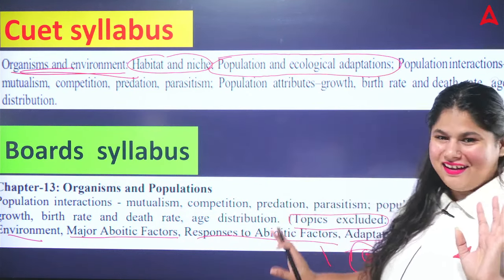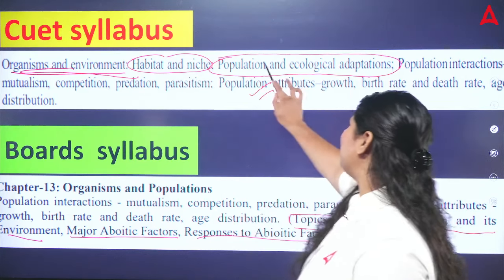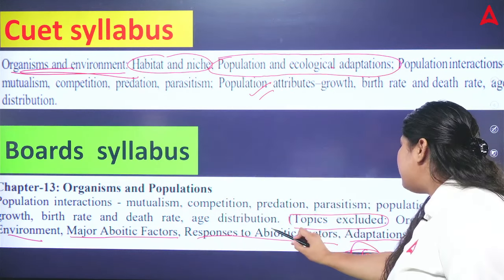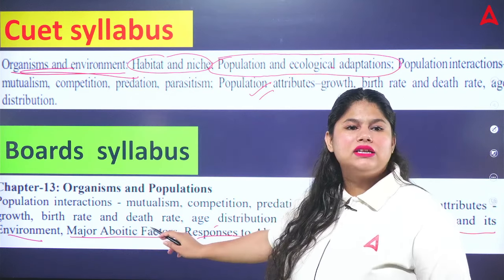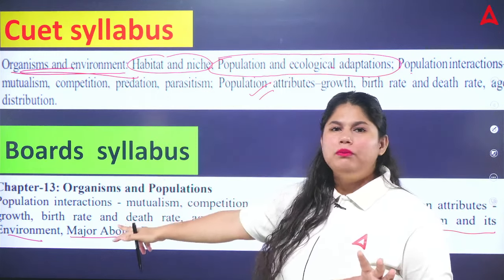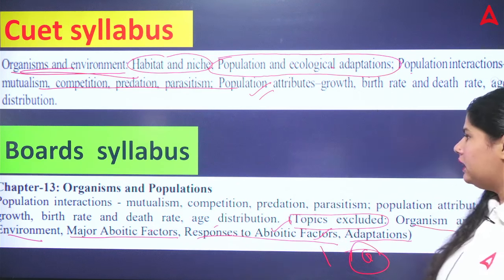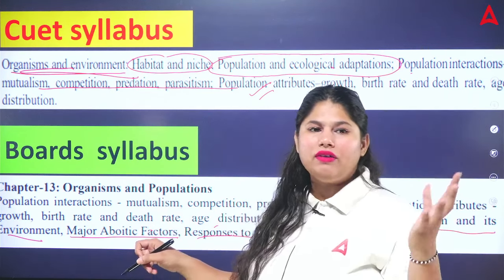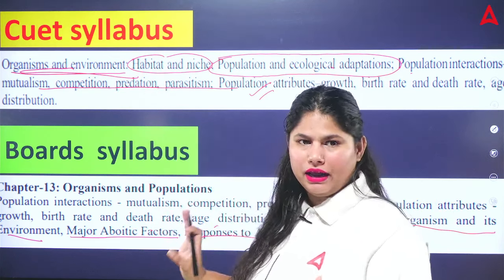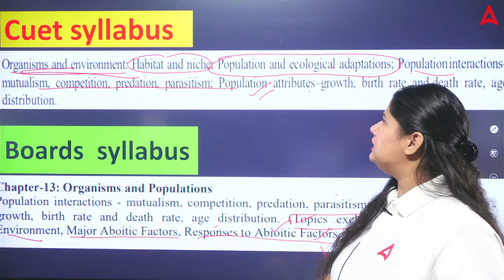In the chapters not coming to the board, one question comes to CUT. Habitat and niche, population and ecological adaptations, and population interaction are included in CUT. In population interaction you will learn about biotic factors — mutualism, competition, predation, and parasitism. These four areas you will learn in CUT but not in the board. Commensalism was in the old NCERT syllabus but is excluded from both board and CUT now.